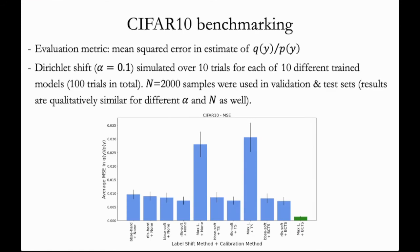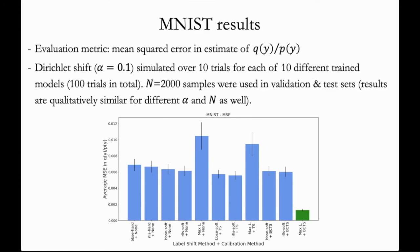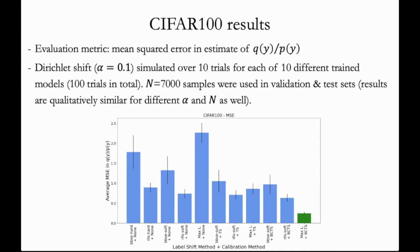Now, when we combine maximum likelihood with our bias-corrected calibration, we get large improvements in label shift adaptation. In this example, max likelihood with BCTS substantially outperforms both BBSE and RLLS. Here we show the results with MNIST. And once again, we find that our proposed method achieves the best mean squared error. And we get a similar trend on CIFAR-100, where our proposed method does the best.